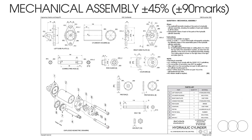Now let's look at question 4, which is your mechanical assembly. This question is going to count the most marks out of all the questions in your paper 2 — it is usually going to count about 90 to 95 marks. This question can be heavily overwhelming for a lot of students, but I want to encourage you to try and do this question as best as you can. Luckily you have a lot of visual presentation of the mechanical assembly to help you.